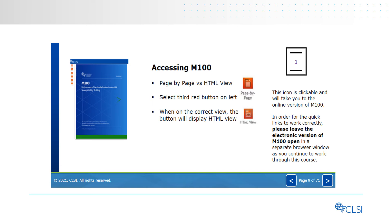Throughout the program, you'll be asked to access the most recent edition of M100, found in a free electronic version on CLSI's website. This access to M100 has been made easy with the addition of page number icons on the slides. When clicked, these icons take you directly to that page in M100 in a new browser window.